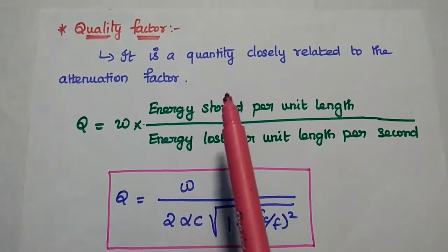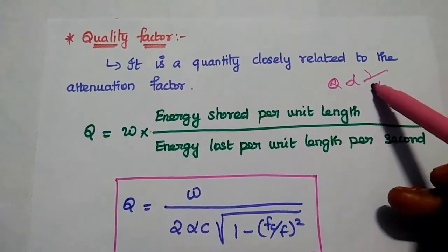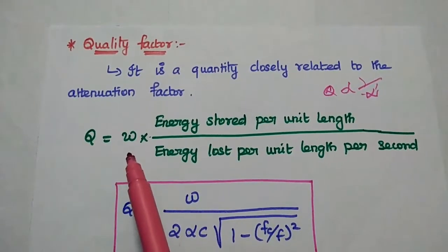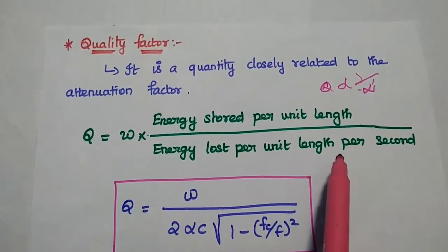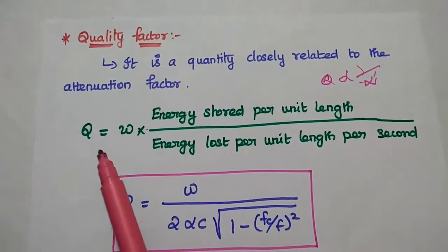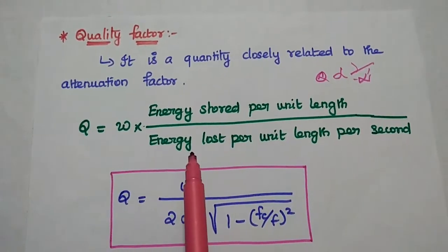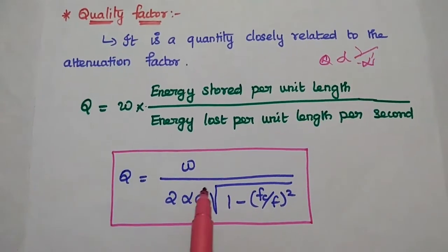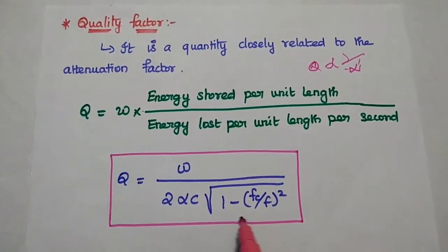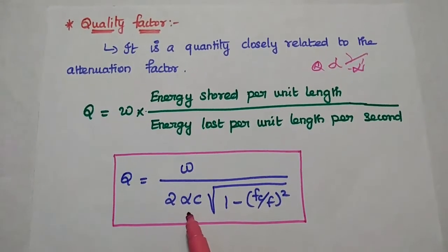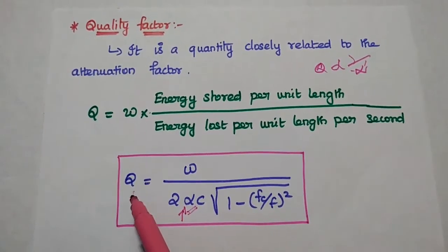Next is the quality factor, which is closely related to the attenuation factor because quality factor is inversely proportional to the attenuation factor. The quality factor is defined as the ratio of energy stored per unit length to the energy lost per unit length per second. It is represented as Q equals omega multiplied by energy stored per unit length divided by energy lost per unit length per second. We can get the expression Q equals omega divided by (2 times alpha_c times square root of (1 minus (fc/f)^2)). If attenuation increases, the quality factor decreases.